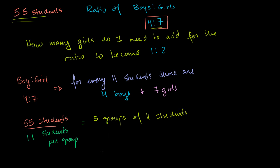And we've done this drill before. Every group has 4 boys and 7 girls. So we have 5 groups, each of them has 4 boys. That means we have 5 times 4, which is equal to 20 boys. And we have 5 times 7, which is equal to 35 girls.